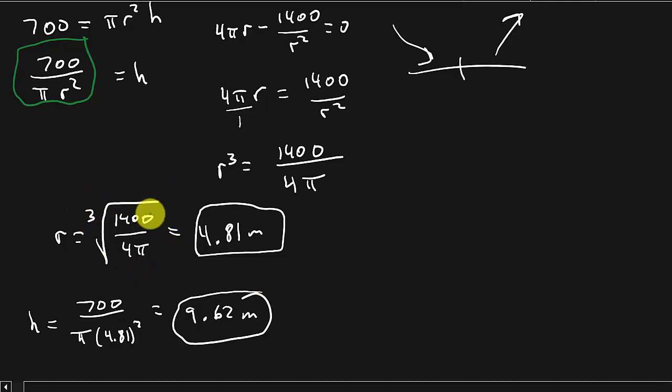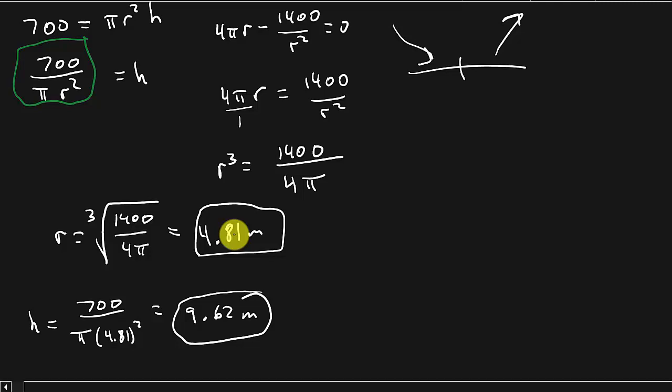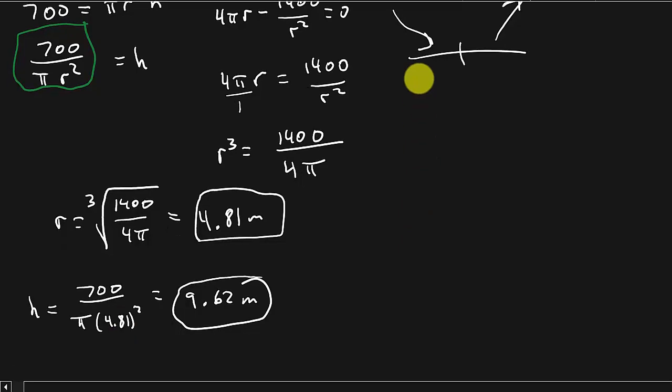If you're doing this in online homework like WebWork, you may want to use the exact value — the cube root of (1400 over 4 pi) — when calculating H, rather than rounding to 4.81. Rounding to too few decimal places can cause rounding error that makes the system mark your answer as wrong even when it's correct.